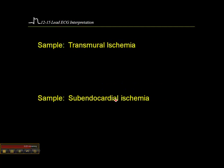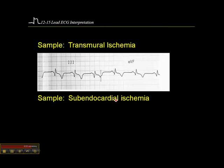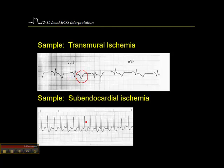When you see ST elevation above the baseline, that's indicative of injury. When we see symmetrically inverted T waves, that's ischemia. For example, inverted T waves in leads III and aVF indicate some inferior wall ischemia.